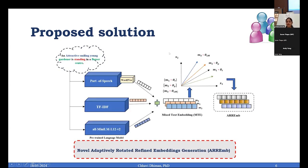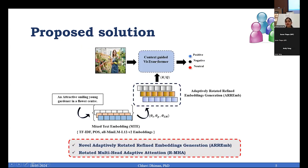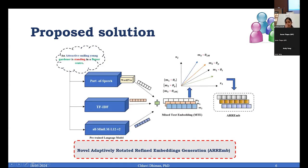These embeddings now represent the discriminant representation of the text instead of the plain mixed text embeddings, and these are finally used for the context understanding of the textual data. Here we have two contributions to make. One is we are defining adaptively rotated refined embeddings. Then secondly, we will be using these embeddings to feed into the vision transformer as a part of multi-head attention, combinedly called as rotated multi-head adaptive attention.